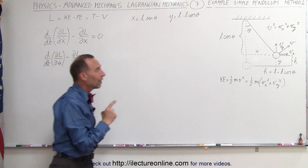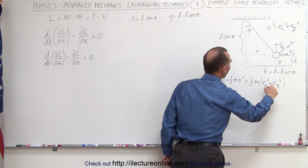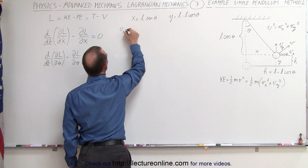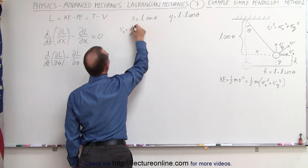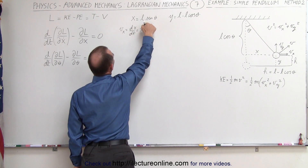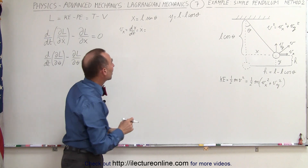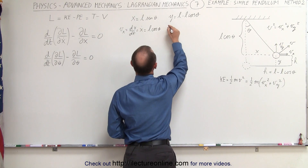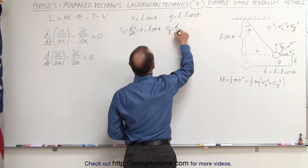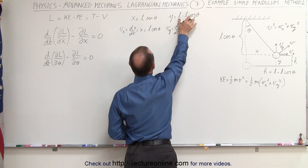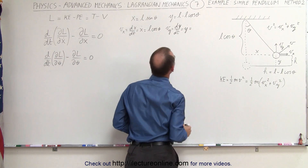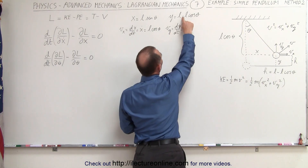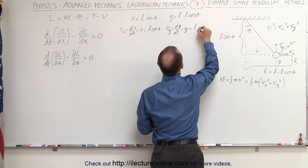The next thing we want to do is find appropriate equations for v sub x and v sub y. The velocity in the x-direction is the derivative of x with respect to time, which is x dot. The derivative of l sine theta becomes l times the cosine of theta. Similarly, the velocity in the y-direction is the derivative of y with respect to time, equal to y dot. The derivative of l is zero, the derivative of cosine theta is negative sine, that negative cancels this negative, giving us l times the sine of theta.